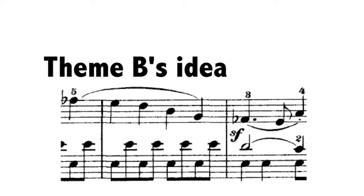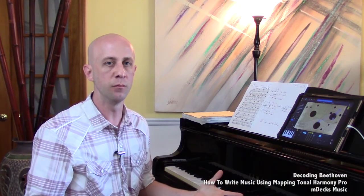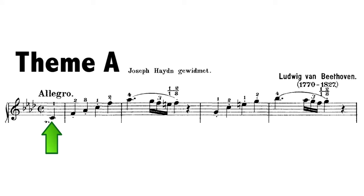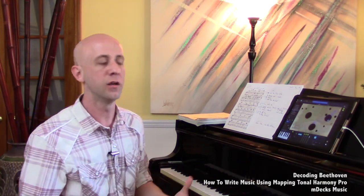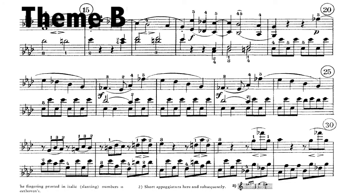That chord progression right there is its own self-contained statement, and that's why you're going to see this sort of literal repetition in theme B. Whereas in theme A we had to play one chord in the idea and go to another one in the repetition, eventually going back to the one chord again — you still have the same 5-1 movement, it just takes a longer time to get there. So theme B has a bit more to it; it's a bit more elaborate.